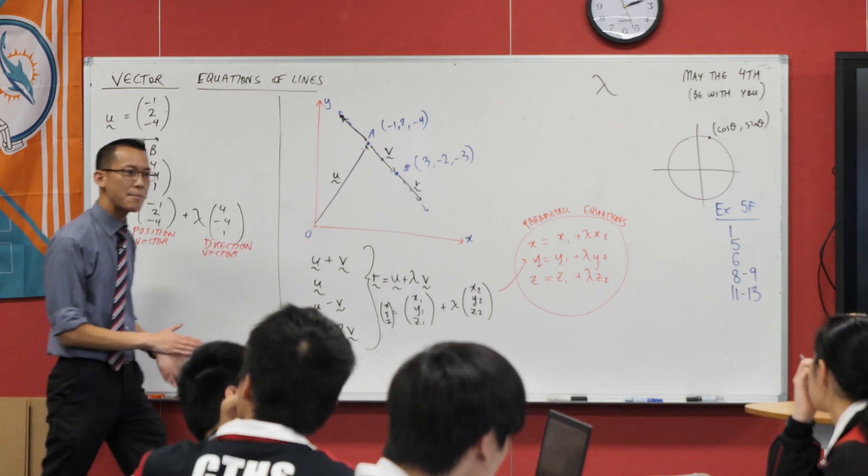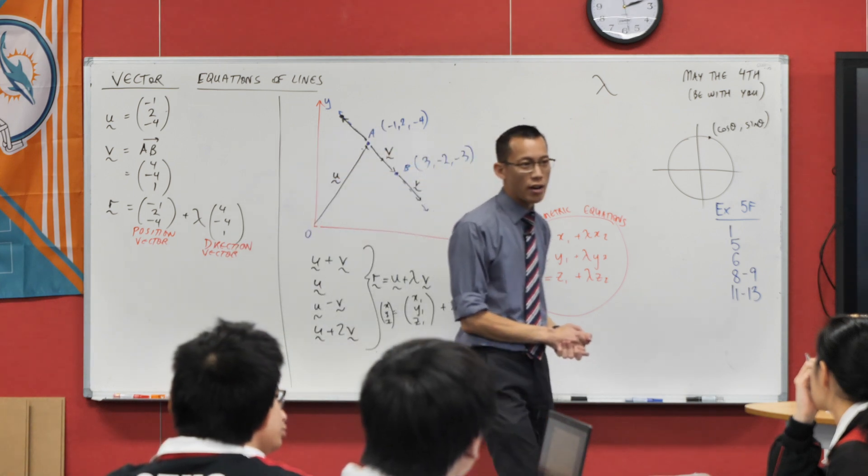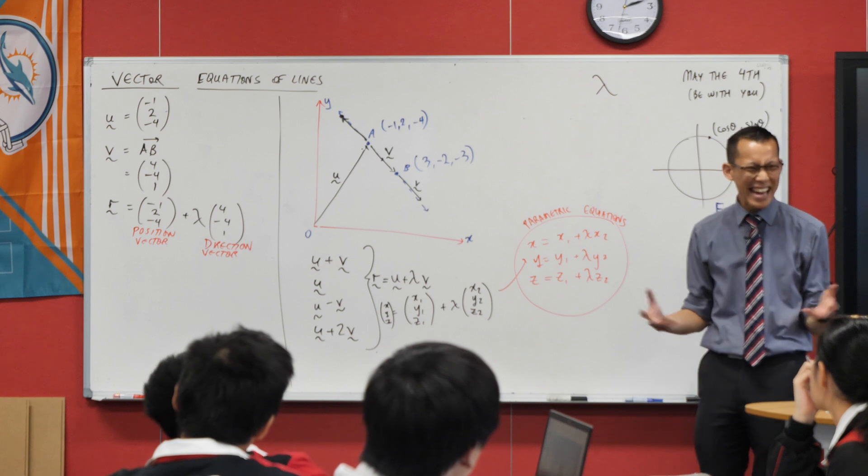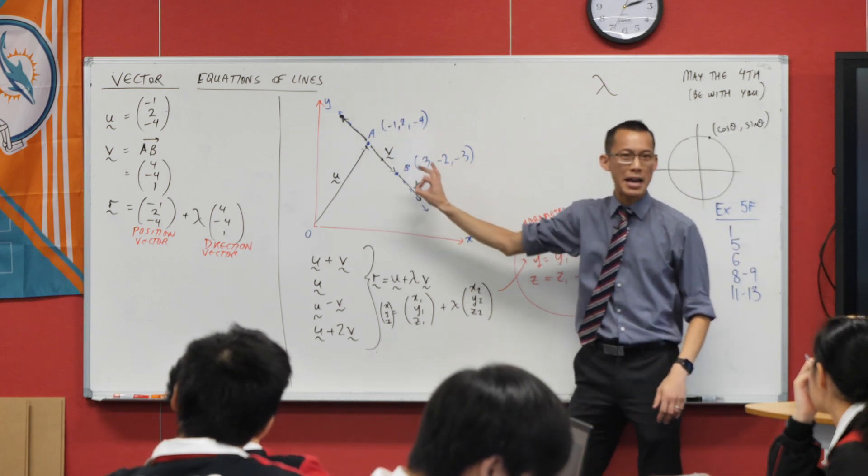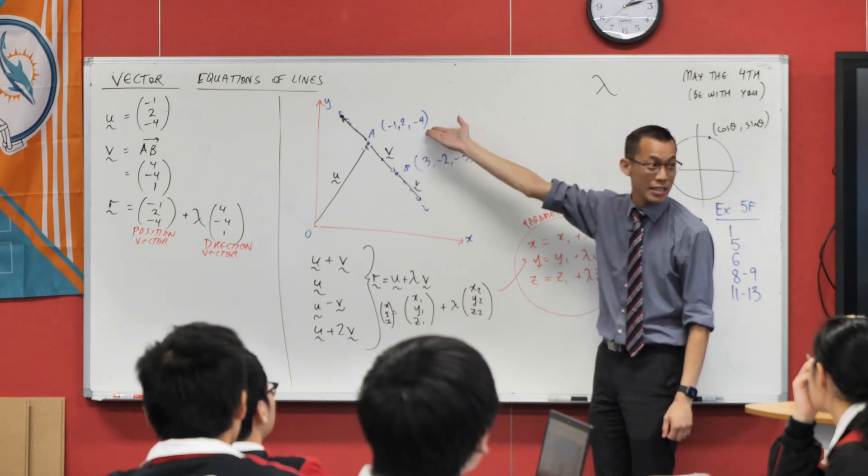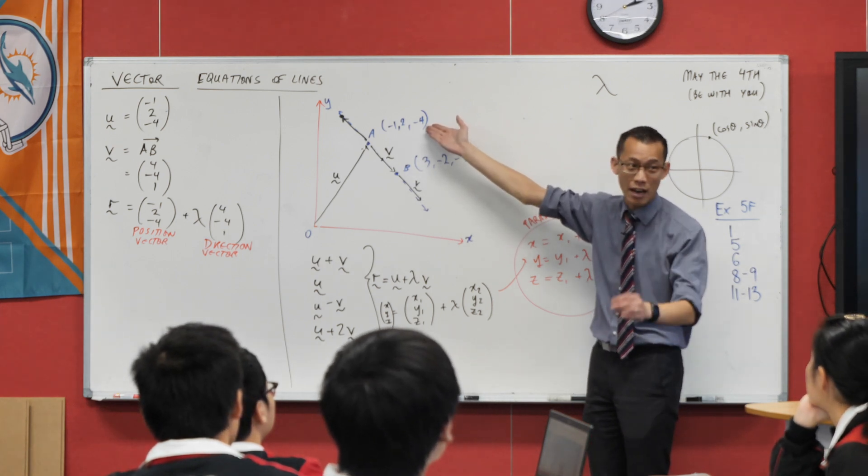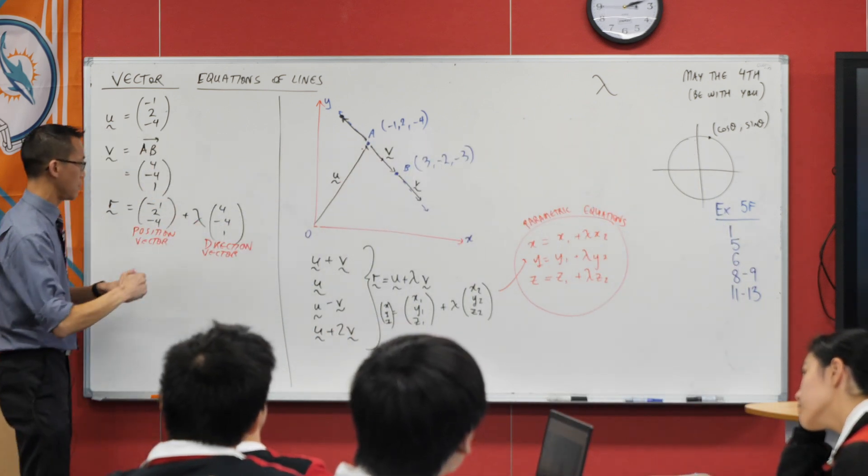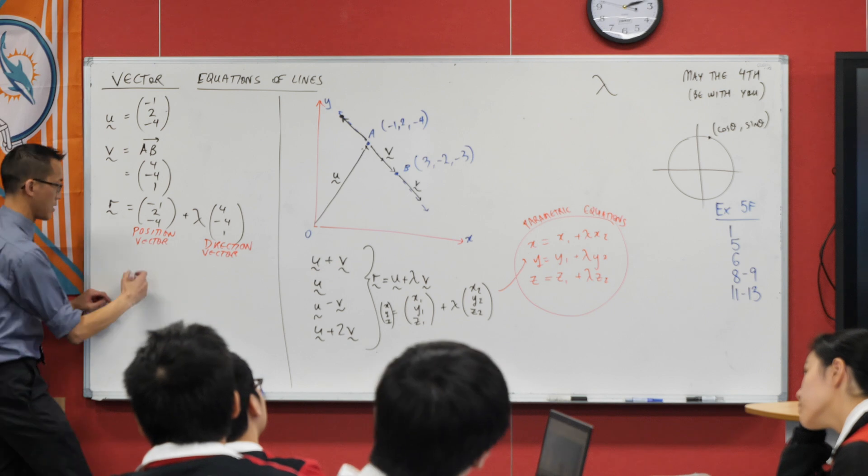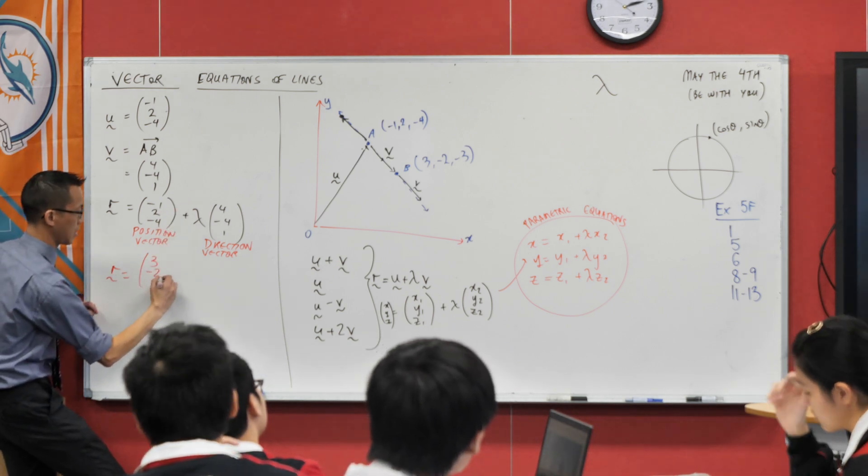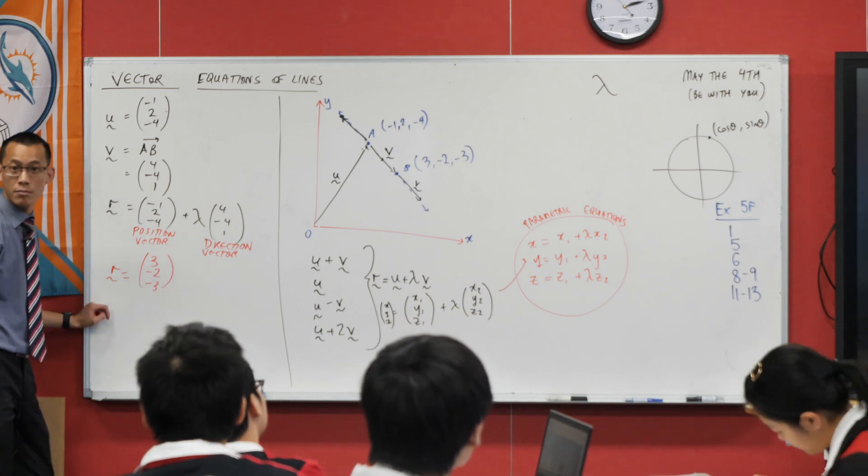Now think about this with me. For line AB, is there not an infinite series of choices for our position vector? Anything on AB could be our position vector. And there's at least one other option that I could use instead of A, like easily, I could just use B. Do you agree? So let's just quickly jot down. If I were to do a different position vector, like say what is it, three, negative two, negative three, I'm still gonna have some multiple of, but it'll be a different direction vector.